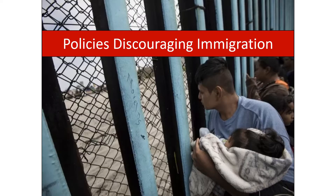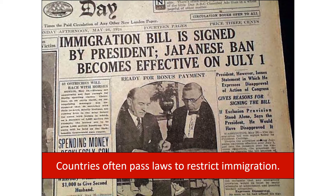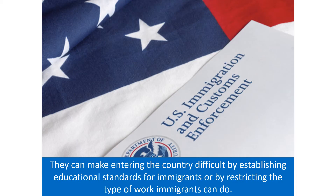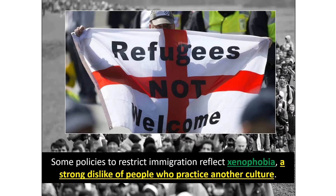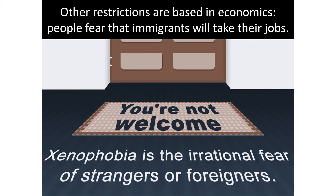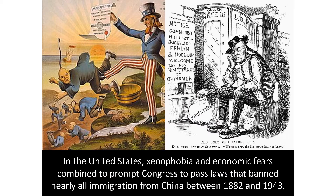Policies discouraging immigration. Countries often pass laws to restrict immigration by establishing educational standards, restricting the types of work immigrants can do, or setting a quota on legal entries. Some restrictions reflect xenophobia — a strong dislike of people who practice another culture — while others are based on economic fears that immigrants will take jobs. In the US, xenophobia and economic fears combined to prompt Congress to ban nearly all immigration from China between 1882 and 1943, known as the Chinese Exclusion Act.